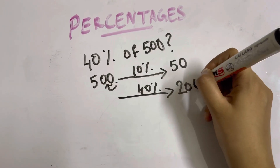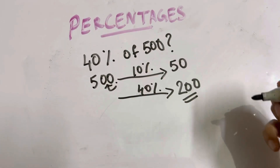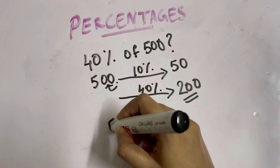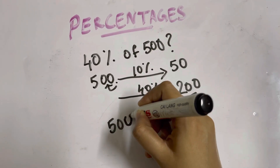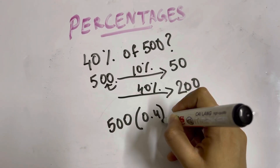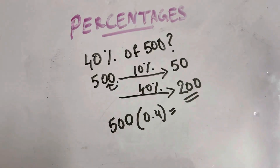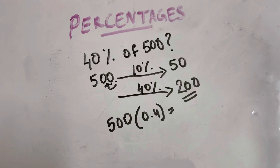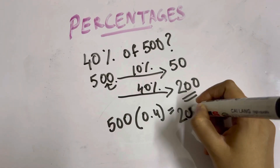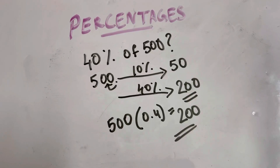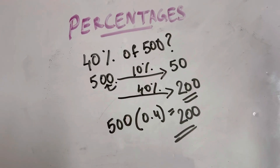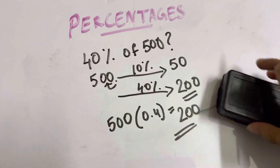Let's check in our calculator: 500 times 0.4 equals 200. We have verified the answer. Let's move on to the next question.